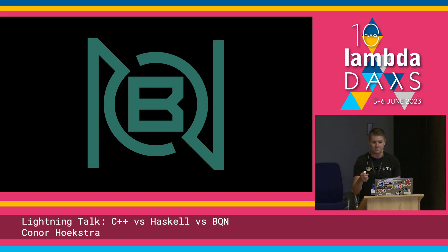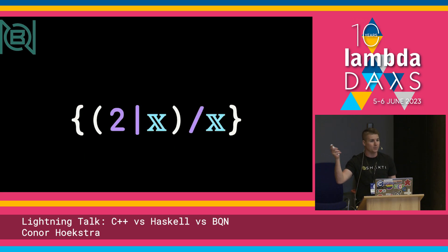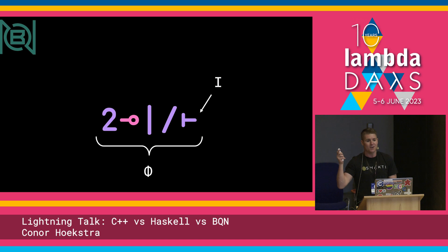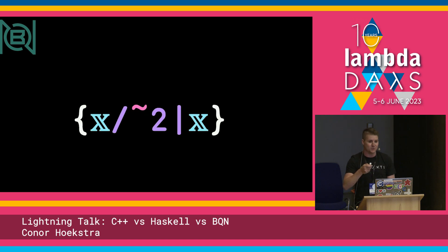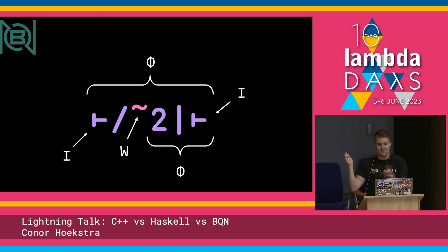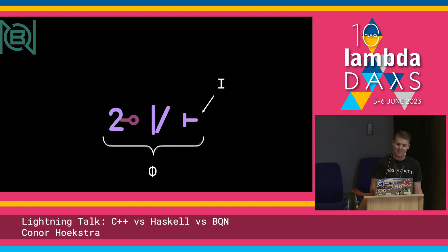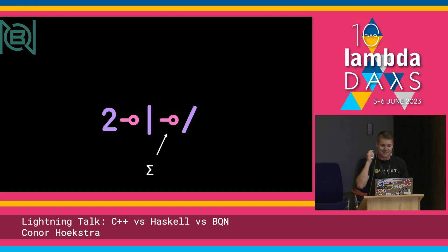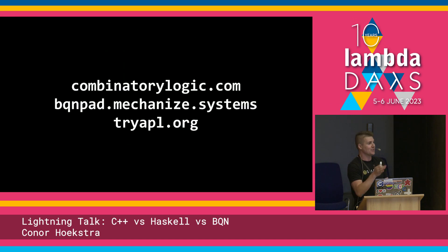We're going to look at three different solutions in BQN. The first is the one we just looked at — absolutely beautiful. We can make it point-free, which is even more beautiful — this is the I combinator combined with the F combinator. A second solution uses the W combinator, and its point-free version uses the FI combinator, another FI combinator, I combinator, W combinator, I combinator — we love it. The third solution uses the sigma combinator, which doesn't exist in any other programming language — absolutely beautiful. Check out all this stuff if you're interested at combinatorlogic.com or BQNpad, tryAPL.